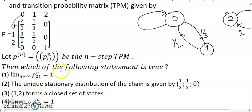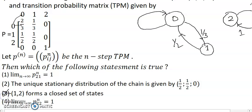Now checking option 3: {1, 2} forms a closed set of states. We do not get any closed path involving both 0, 1, and 2 together. Since there is no path keeping the chain within {1, 2} exclusively, option 3 is wrong.